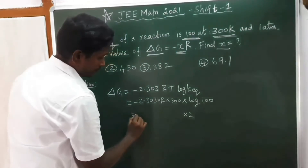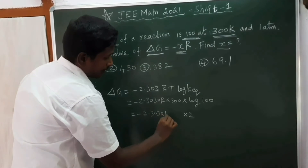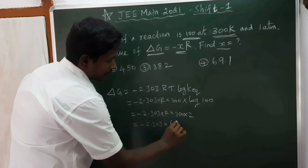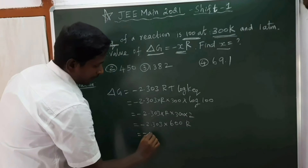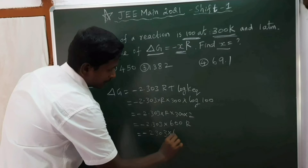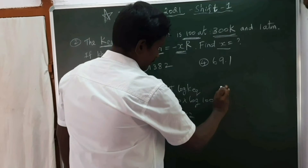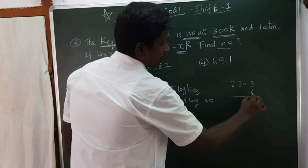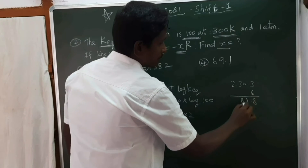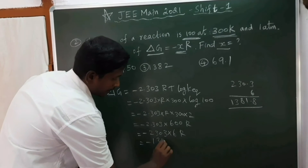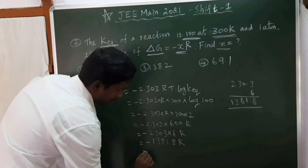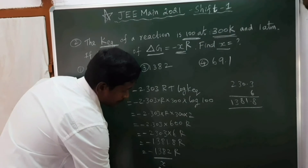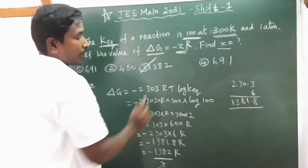Log 100 equals 2. So, ΔG = minus 2.303 × R × 300 × 2 = minus 2.303 × 600R = minus 1381.8R, which is approximately minus 1382R. So the value of x equals 1382. Option 3.